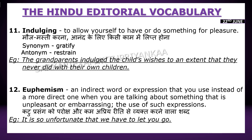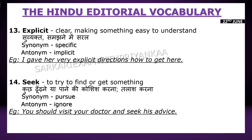The next one is 'explicit'. Explicit ka matlab hota hai jo bhi cheez clear hai ya aasani se samajh mein aa rahi hai — usse hi explicit kaha jata hai. Synonym: specific. Antonym: implicit. Example: 'I gave her very explicit directions on how to get here.'